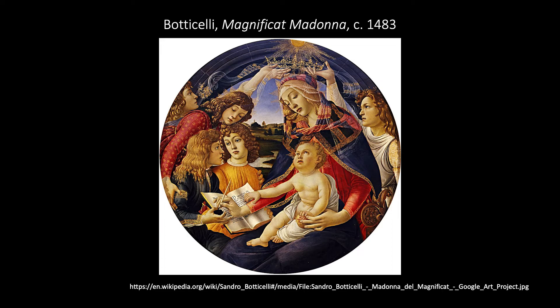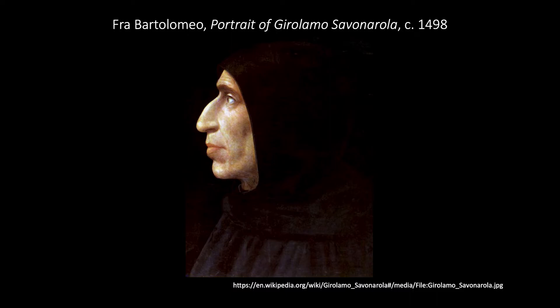Towards the end of his life, Botticelli became a follower of a fiery preacher, the Dominican monk Savonarola, who preached against corruption in the church and called for the destruction of secular art and culture. Right about the time of Savonarola's death in 1498, Botticelli actually stopped painting anything at all, even religious subjects, while he was under Savonarola's influence. Savonarola was first excommunicated by the pope, then finally put to death in Florence in 1498. After his death, Botticelli apparently did begin to paint again, although he produced relatively little work, being elderly for those times by then.